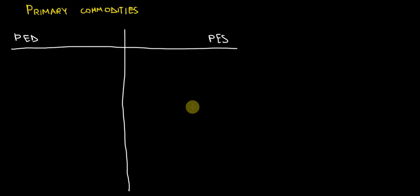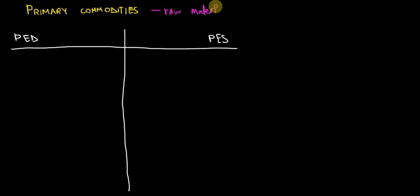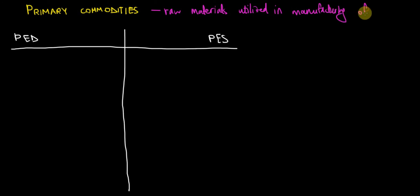I'd like to discuss a special type of goods — primary commodities — and examine their price elasticity of demand and price elasticity of supply. Primary commodities are the raw materials utilized in the manufacturing of final goods. They are called 'primary' because they represent the initial stage of production, before being used to create finished products.